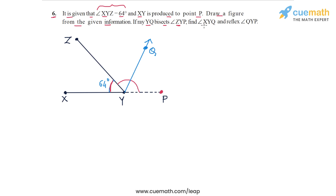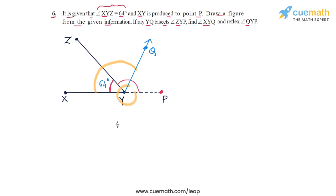We have to find angle XYQ and reflex angle QYP. So let's highlight both of these angles. Angle XYQ is this angle here, and reflex angle QYP is this reflex angle here. So these are the two angles that we have to find.